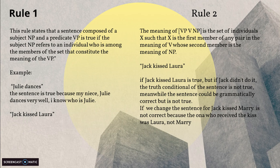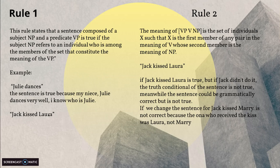We have the example 'Julie dances.' This sentence is true for me because Julie is my niece and I know that she dances very well. The main point is that I know who Julie is, that's why the example is true for me. The book also gives another example: here 'Julie' is the noun phrase and 'dances' is the verb phrase, and together they make a sentence.